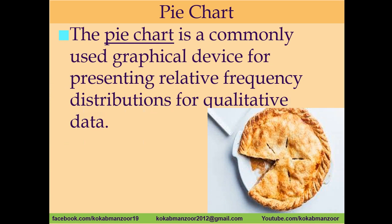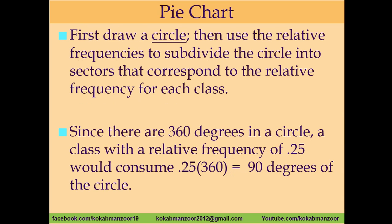We can also present data using a pie chart. A pie chart is represented as a round circle. It is the most commonly used graphical device for presenting relative frequency or percent frequency distributions for qualitative data. It is very easy to understand the entire meaning of the data. We draw a circle and then divide it into different portions based on the relative frequencies.